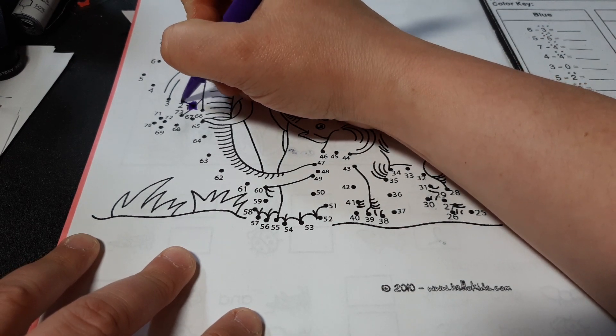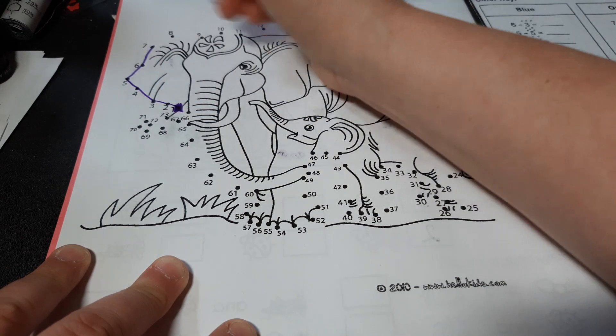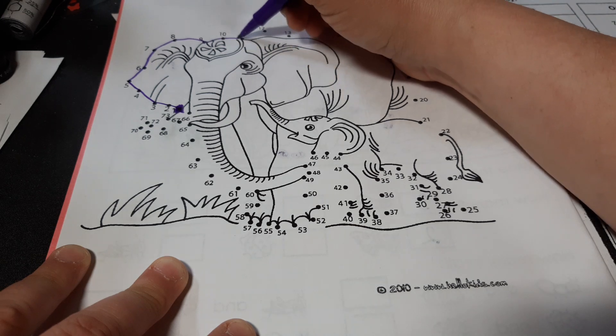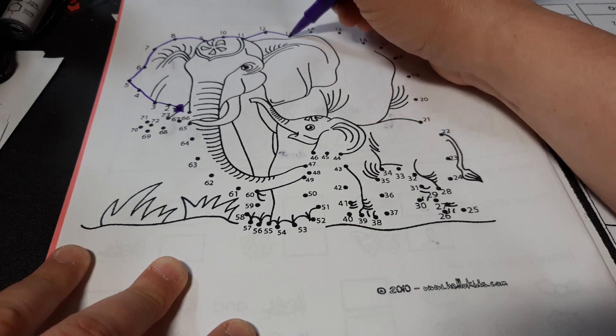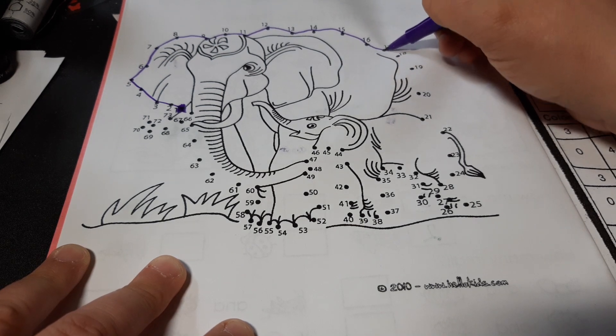So we've got 1, 2, 3, 4, 5, 6, 7, 8, 9, 10, 11, 12, 13, 14, 15, 16, 17, 18.